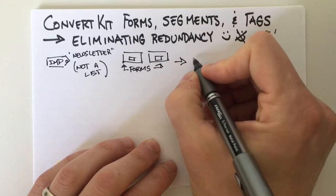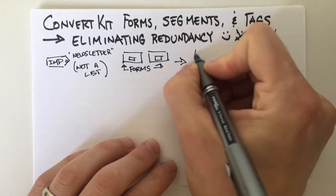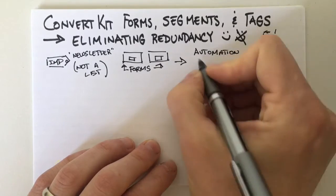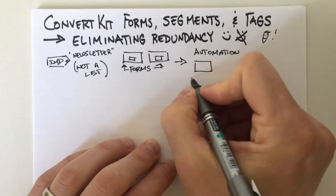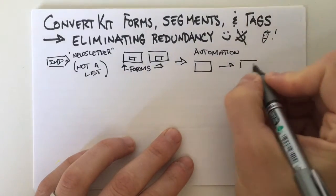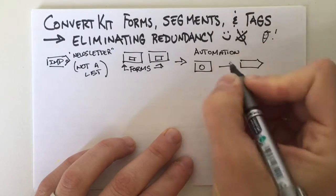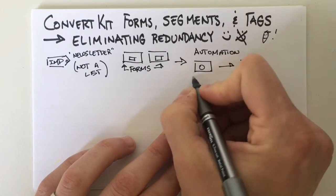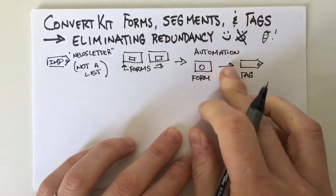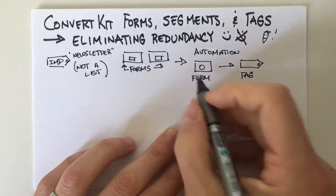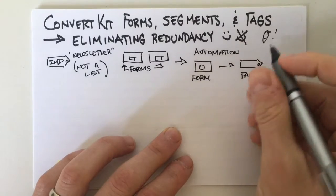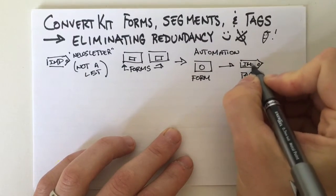And because people try and do this, this is what we see a lot. People set up an automation rule of a subscription to a form going to a tag. So subscribes to a form, add a tag — and then you keep adding new rules. Every single time there's a form, you have to create a new subscription rule.